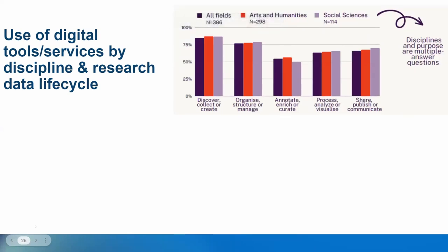On average, two-thirds of participants across all disciplines use digital tools throughout the research data life cycle. The use of digital tools is most common during data collection — either creating or discovering data — at 85 percent. In contrast, digital tool use is less widespread for annotating and enriching or curating data, with only about one in two participants performing these tasks digitally, at approximately 54.7 percent.